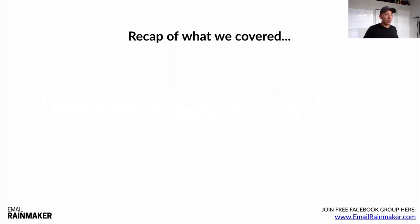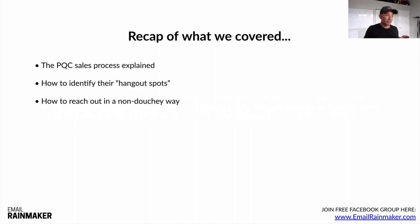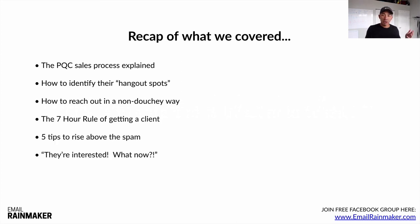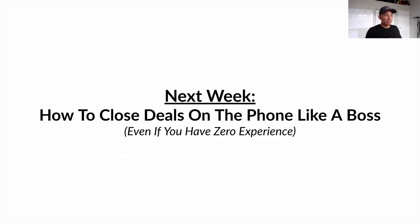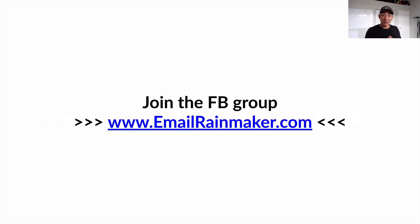Recap of what we covered — a long video, but I hope you got a ton of value. The PQC sales process explained: prospect, qualify, close. How to identify your dream client's hangout spots. How to reach out in a non-douchey, non-spammy, non-annoying way. The seven hour rule of getting a client. Five tips to rise above the spam. And when they're interested, you hop on that 15-minute discovery call to qualify them and see if they're a fit. Next week: how to close deals on the phone like a boss, even if you have zero sales experience. Make sure you join my free Facebook group at emailrainmaker.com. If you liked this video, like it, comment below with any questions, and I'll see you next week for video number four.